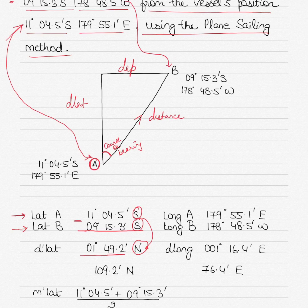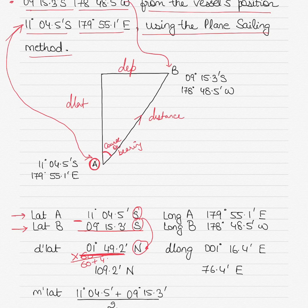So I have 1°49.2', but I have to convert this into minutes. I will multiply the degrees only by 60: 1 × 60 = 60. Then I add the remaining minutes: 60 + 49.2 = 109.2. So D lat = 109.2 minutes North.